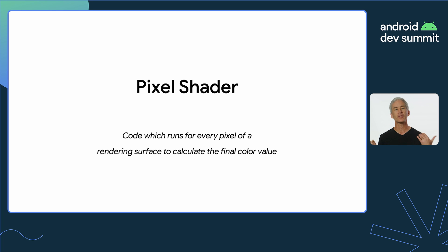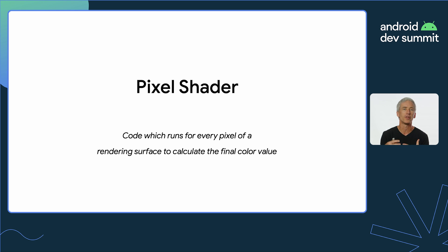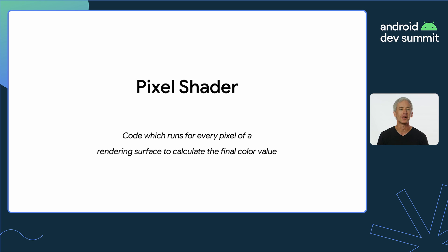Let's talk about what pixel shaders are. The correct term is actually fragment shader — that is what people actually talk about. Fragment is really about the visual stuff that is going to be altered on the screen, as opposed to pixels which are every element on the screen. They're kind of synonymous, but pixel is a more common word so I'm using it here. A pixel shader is code that is going to run on every single pixel of an image to determine the final color value that shows up.